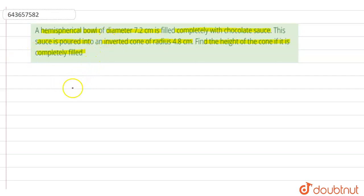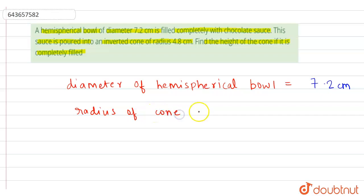So we are given a hemispherical bowl of diameter 7.2 centimeter, and radius of cone is given as 4.8 centimeter. And we are given that the sauce from hemispherical bowl is completely filled in the inverted cone.